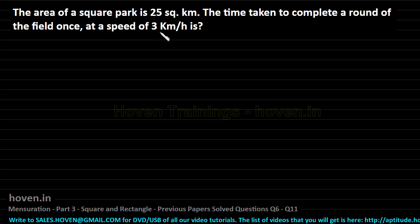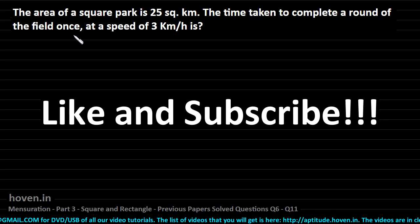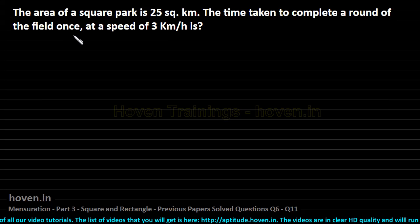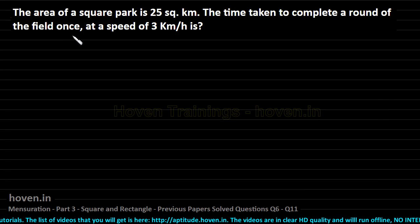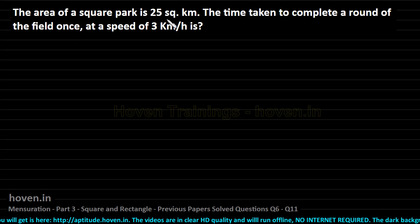The distance travelled has been given equal to the round of a field once. So the distance has to be travelled equal to the perimeter of the square field. And for perimeter we will need the side. And for side, we have been given the area. So let us start.